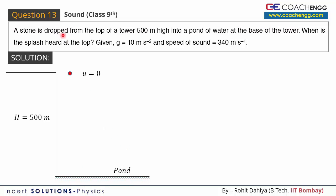The word 'dropped' means the stone's initial velocity is zero — it is gently released without any initial velocity. Due to gravity, the stone will come down and accelerate. The acceleration due to gravity is represented by the symbol g, and its magnitude is 10 meters per second squared.